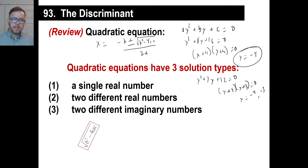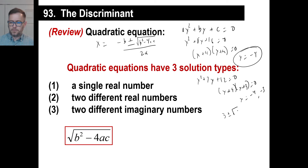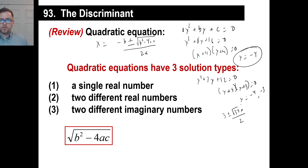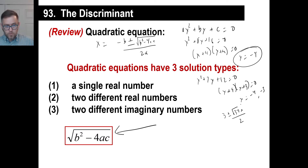The other possibility is that you have two different imaginary numbers. That looks like x equals 3 plus or minus the square root of 37 times i, over 2 or something like that — the i makes it two imaginary numbers. What we're looking at is called the discriminant. Today we don't even have to solve these at all; we're just looking at what's underneath the square root: b² minus 4ac. That's all we care about today.